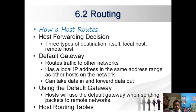Section 6.2 Routing. Host forwarding decisions involve three types of destination: itself (localhost), local host, and remote host. The default gateway routes traffic to other networks. A host has a local IP address in the same address range as other hosts on the network.